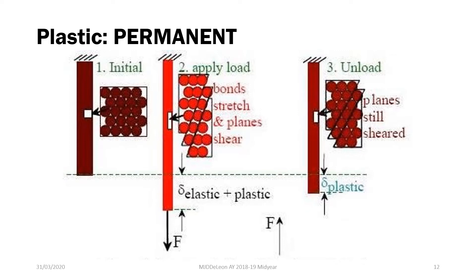For plastic deformation, aside from the stretching of bonds, when the bonds can no longer accommodate the deformation, there will be either slip or twinning — involving the breaking and reforming of bonds. This accounts for the plastic deformation, leading to permanent set deformation in our material after removing the applied stress.